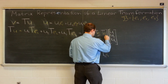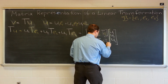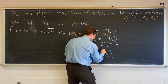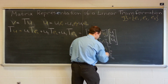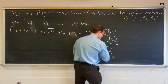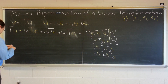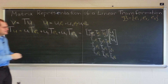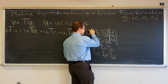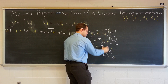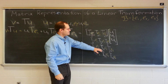And likewise for T(E3): T13, T23, T33. All of this equals V, because V = T(U). So now that we know how these vectors are represented with respect to the basis as three linear combinations, let's push this towards matrix notation.